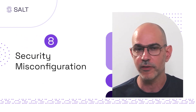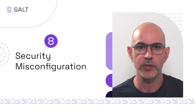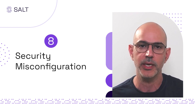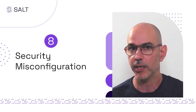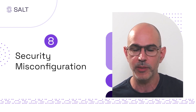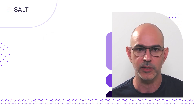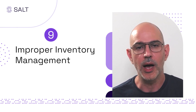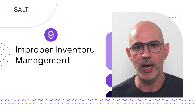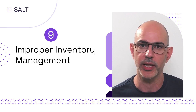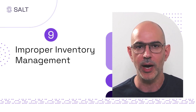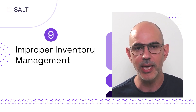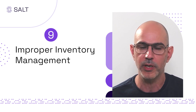API 8 is a very large category containing every possible security misconfiguration you can make in your APIs — whether it's directly on the APIs, the supporting backend, or anything else. API 9 applies when API developers and maintainers are not actually aware of all the APIs they have published on the internet. When there are APIs and endpoints that you are unaware of, that is API 9 — improper inventory management.